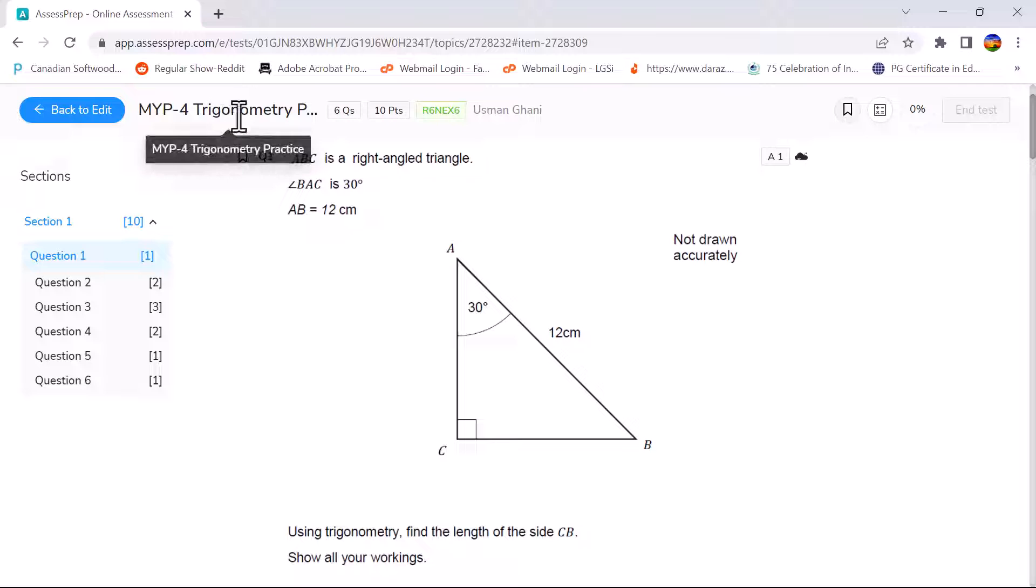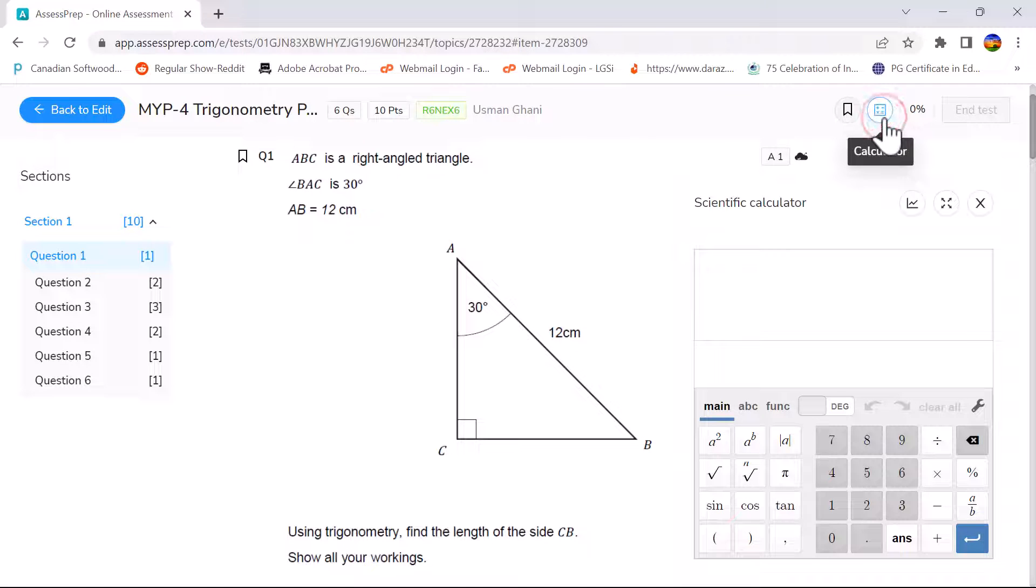On the top left corner you can see the name of the exam, you can also see how many questions you have and also the total marks. On the top right side you will see the calculator button and simply pressing it will open the scientific calculator. We will look at the functionalities of this later.